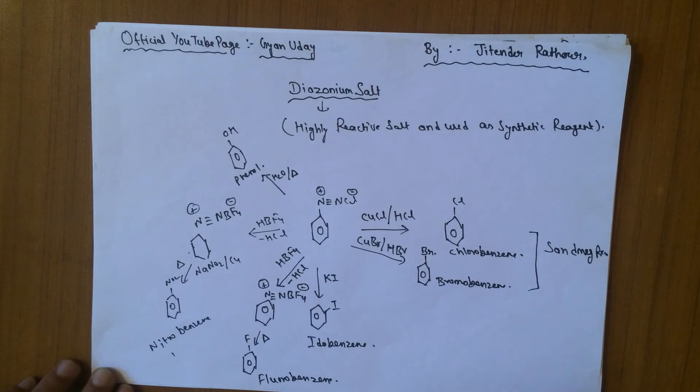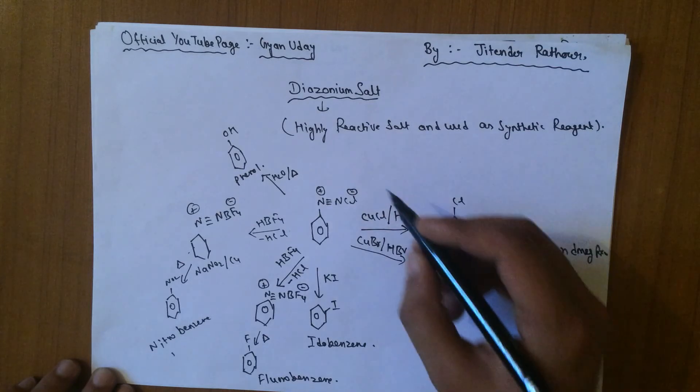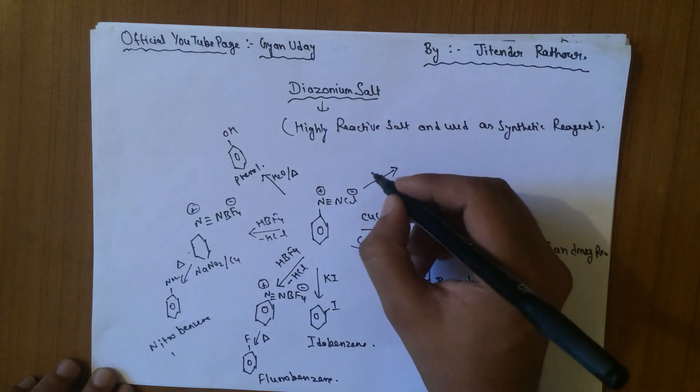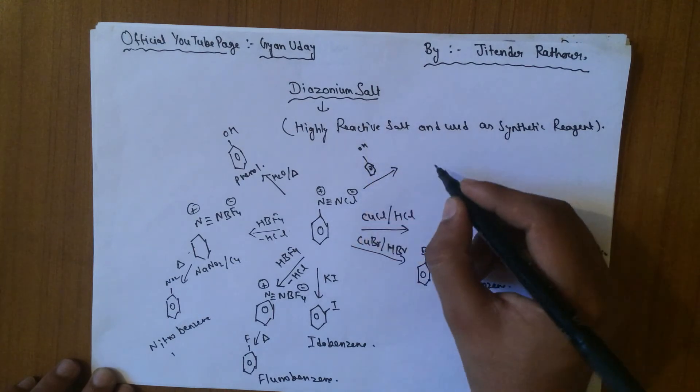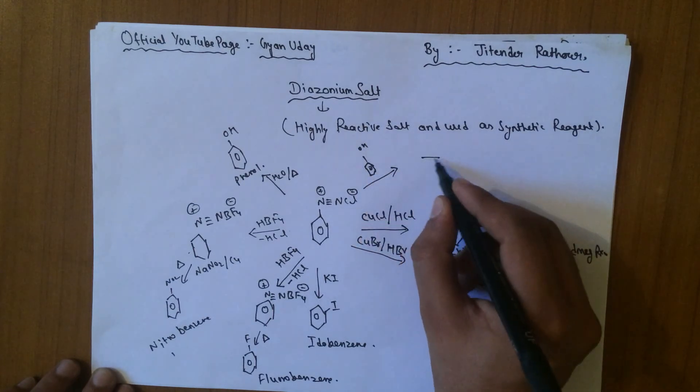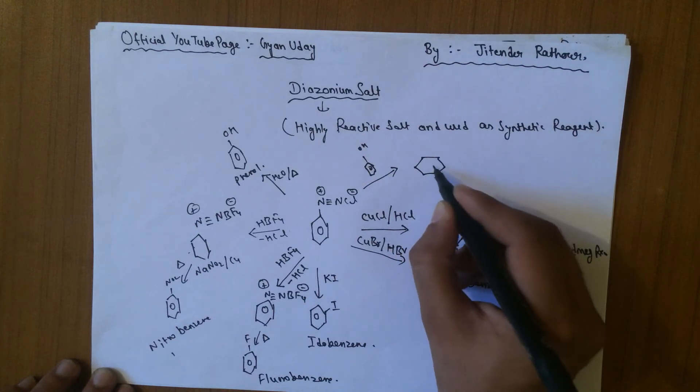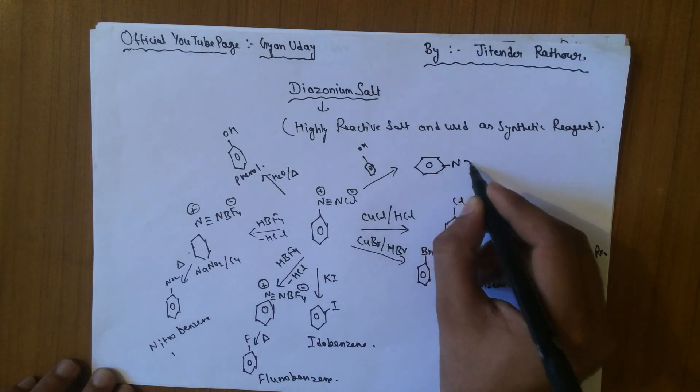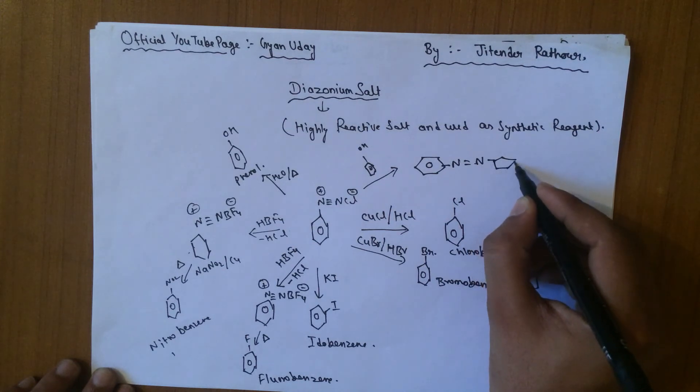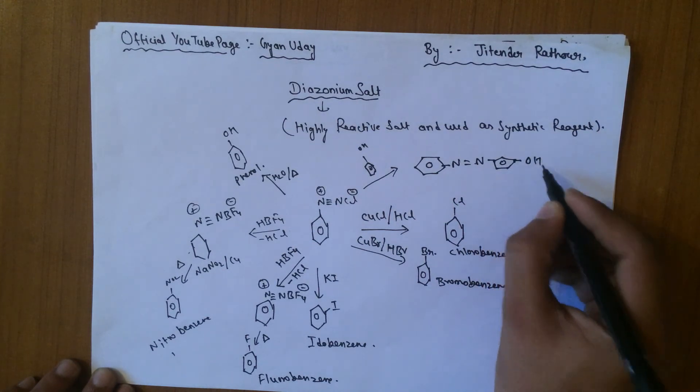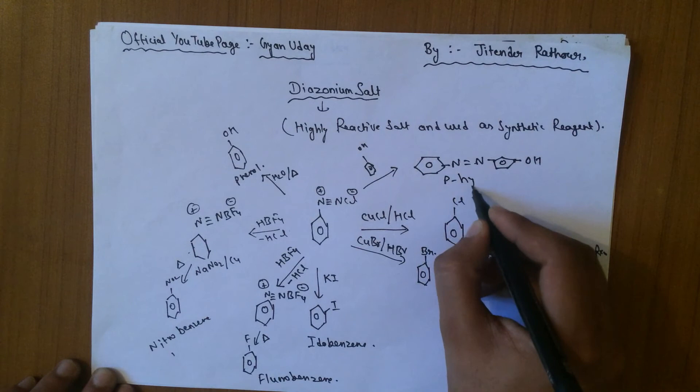And if diazonium salt reacts with phenol, then parahydroxyazobenzene is formed. The result is a double bond nitrogen cyclic compound with OH group, which is known as parahydroxyazobenzene.